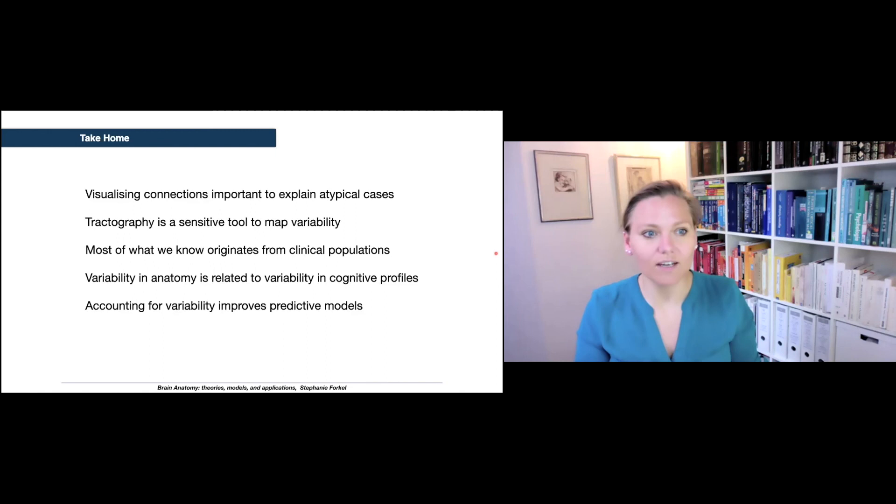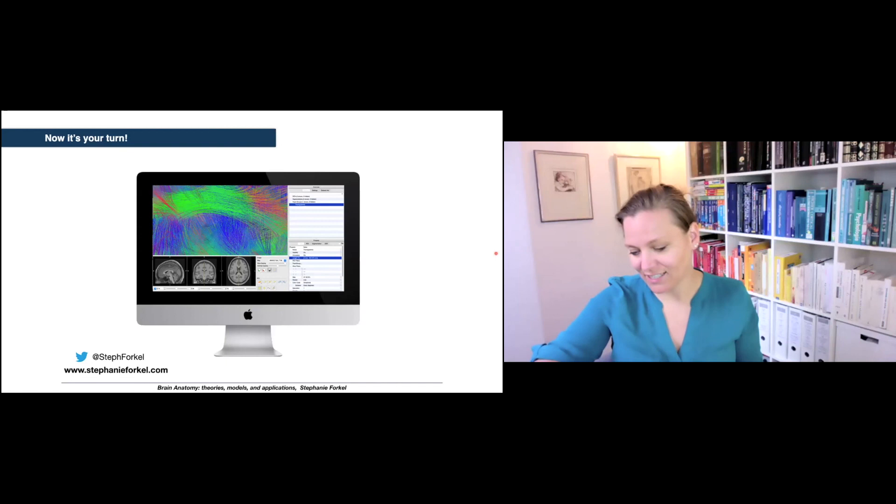The take home message: visualizing connections is important because it helps us to explain atypical cases. I've shown you that tractography is a sensitive tool to map variability. Most of what we know originates from clinical populations, that is important to bear in mind, and I have shown you that the variability in anatomy is related to variability in cognitive profiles and that accounting for this variability actually improves our predictive models.